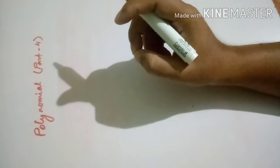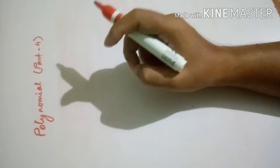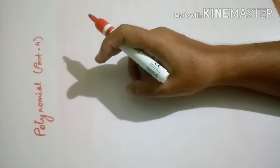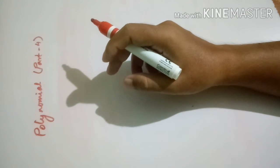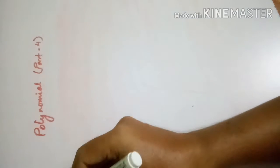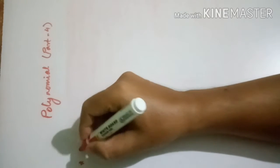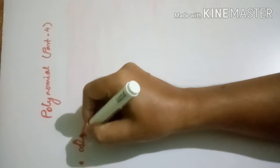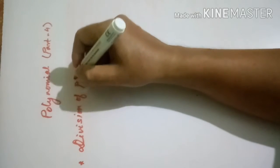We will learn how to find the quotient and the remainder. After finding the quotient and remainder, we have to prove that the division algorithm is true. The first topic we are going to learn is division of polynomials.